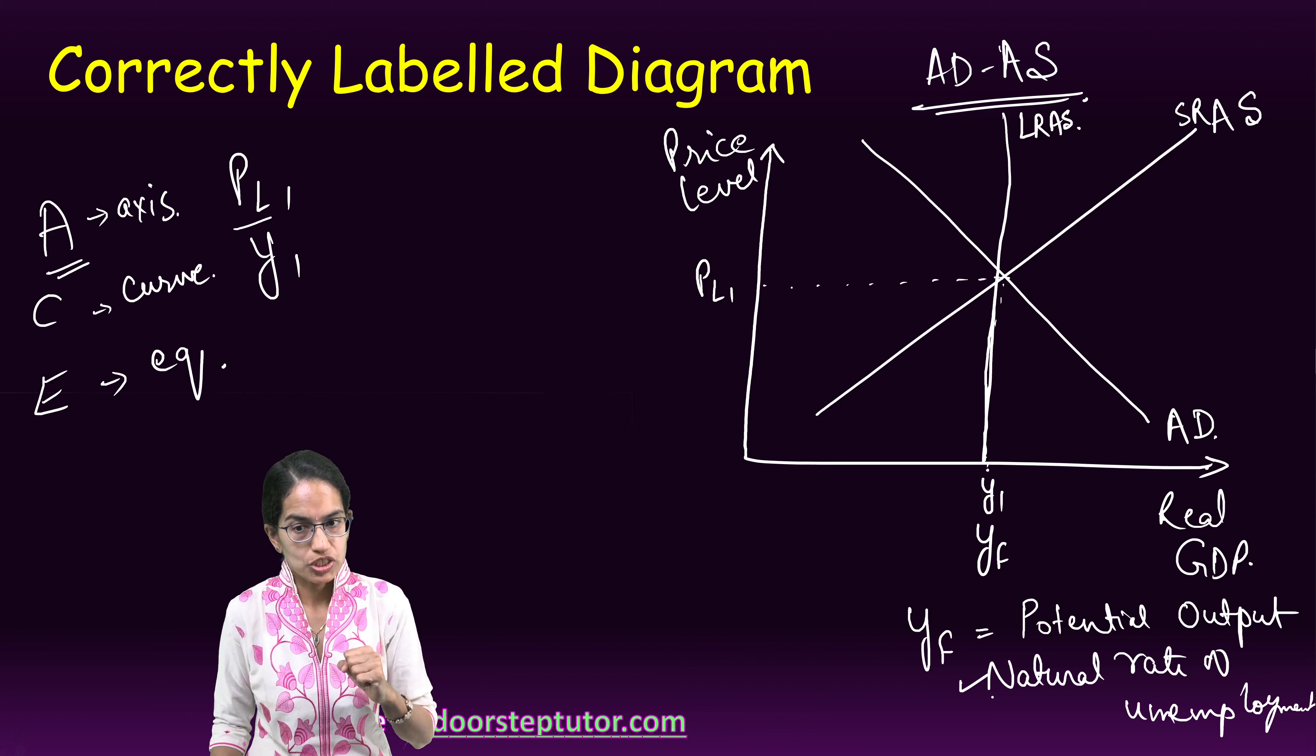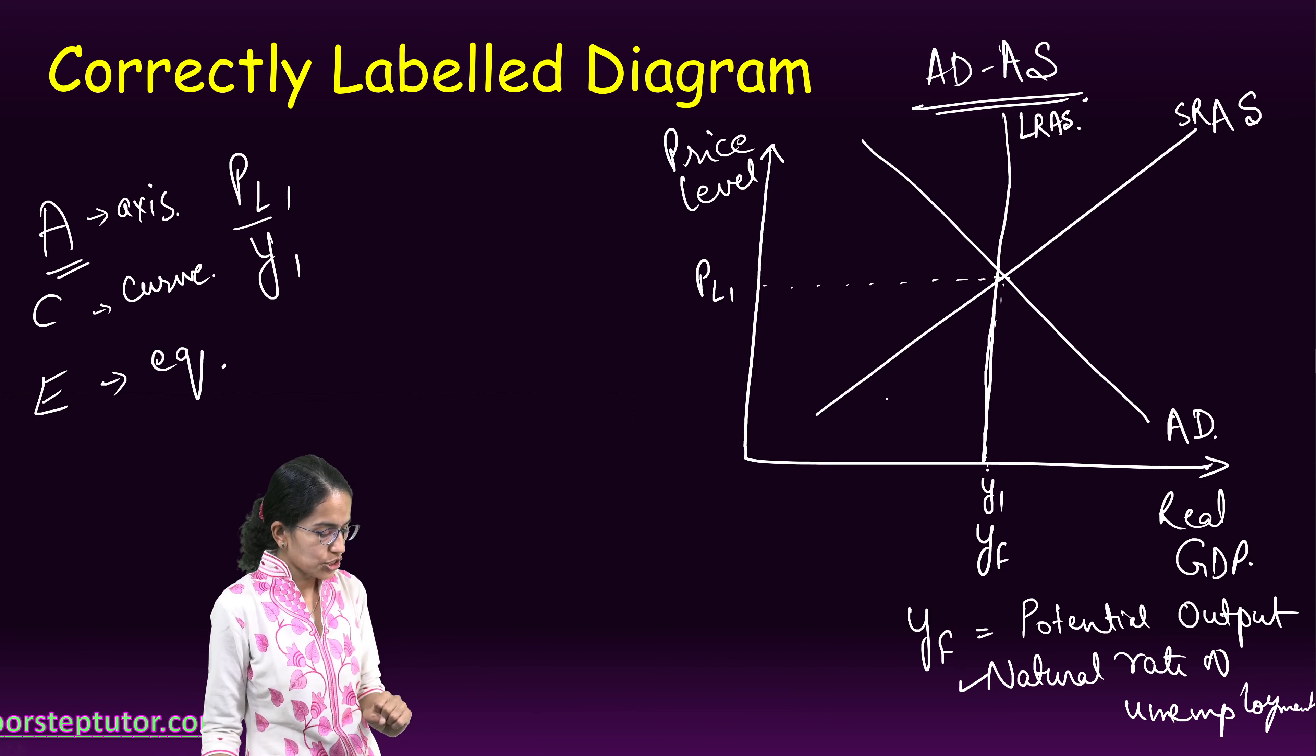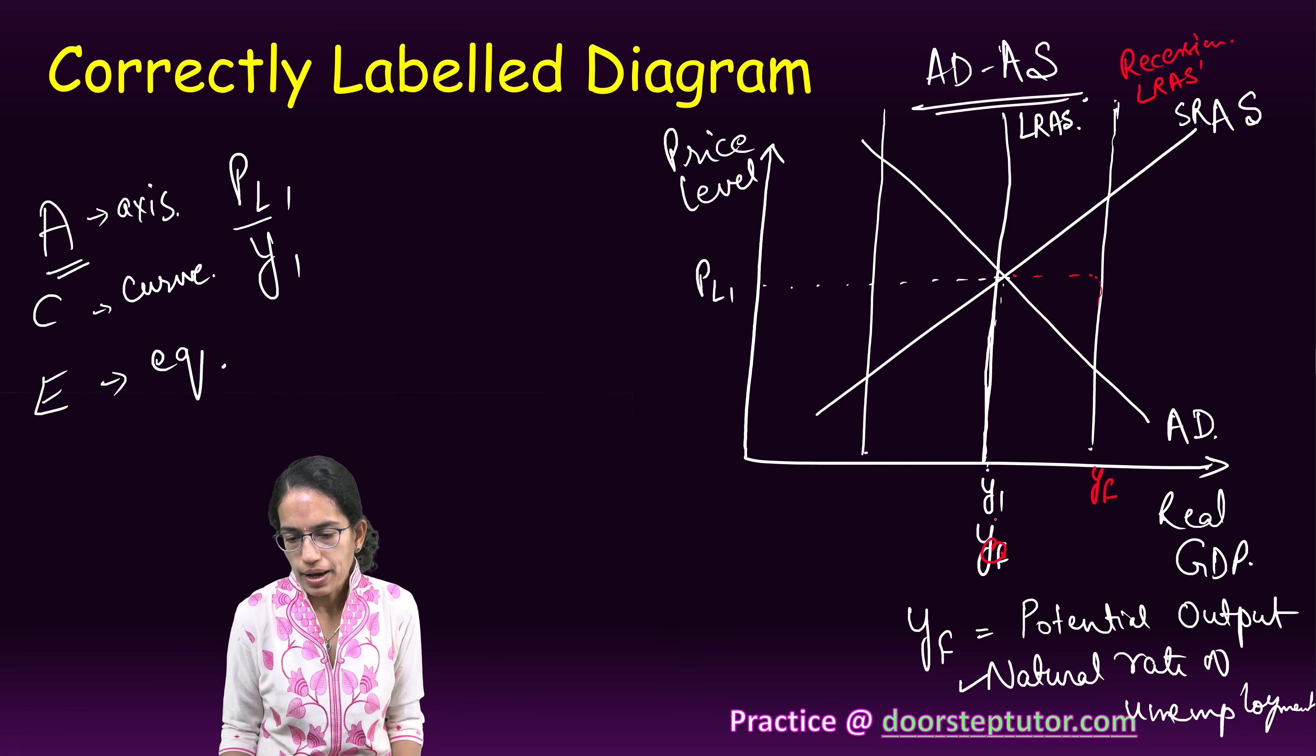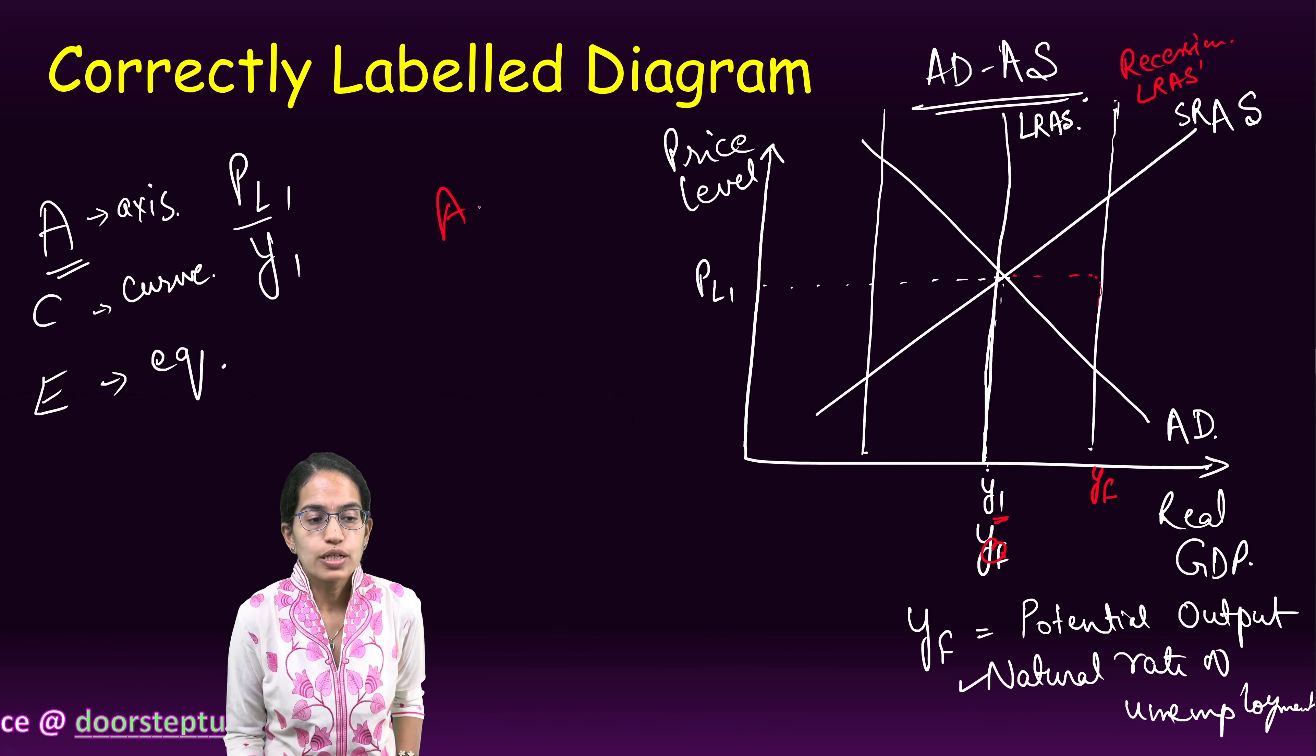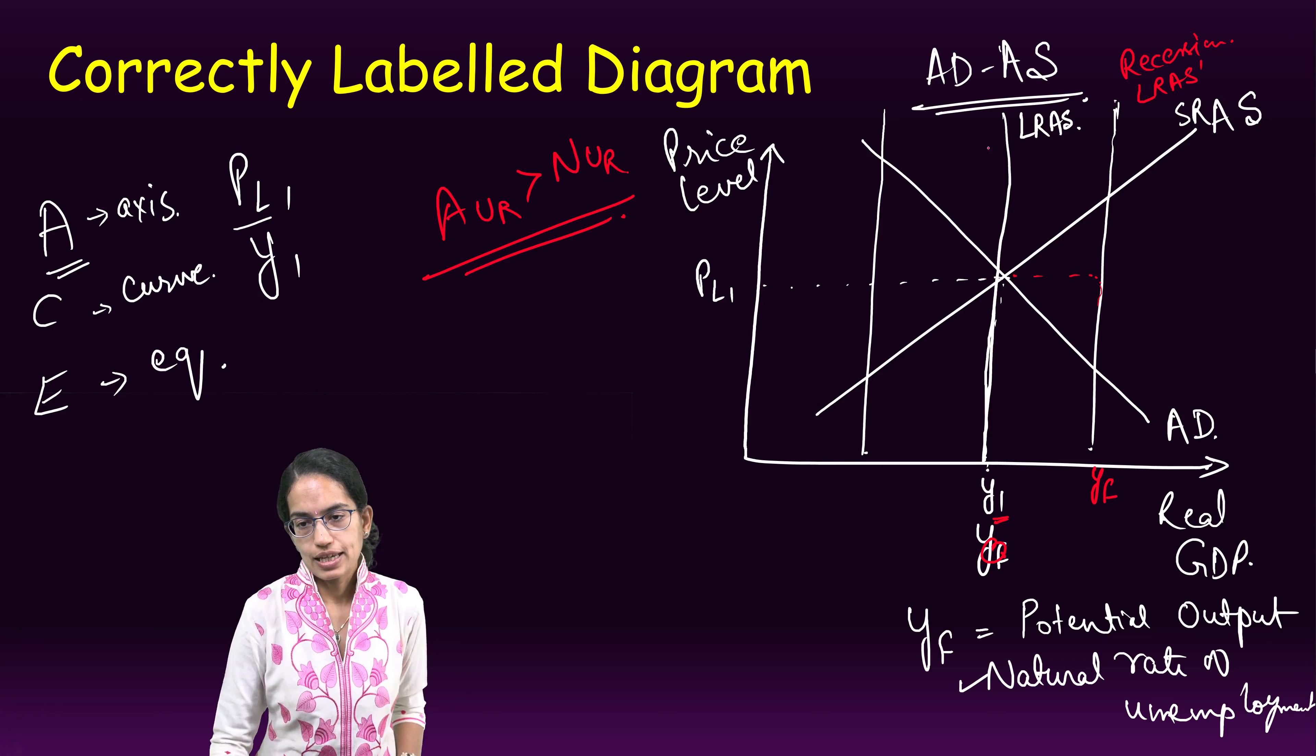It's not the actual unemployment which is in the market. Now what would happen in the case of a recessionary and an inflationary cycle? In a recessionary cycle, my long-run aggregate supply would be towards the right of it, and here this would be my full employment. So my actual rate of output would be less than the full employment, or I can say my actual rate of unemployment would be greater than the natural rate of unemployment. That is the case of recession.